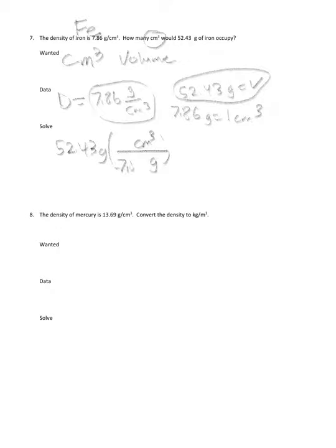You want grams to cancel, so grams needs to go in the denominator: 7.86, that's the same as one cubic centimeter. We get our calculator out: 52.43 divided by 7.86 gives me 6.6704835 cubic centimeters.